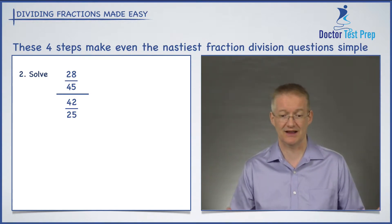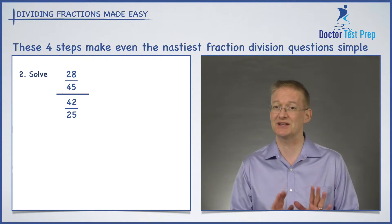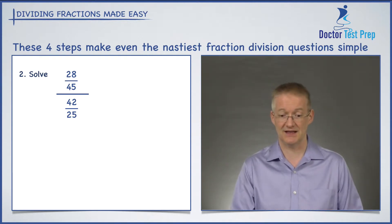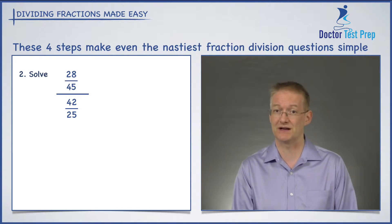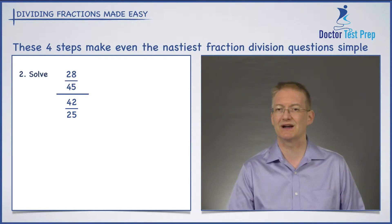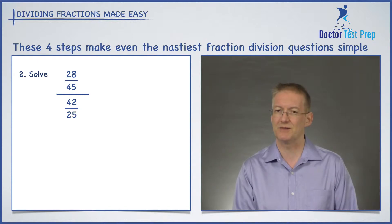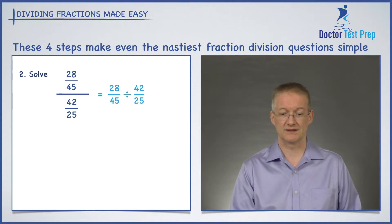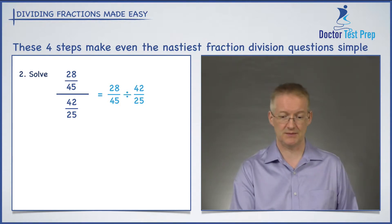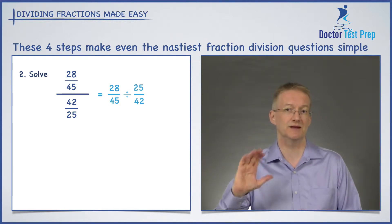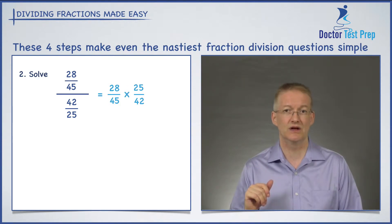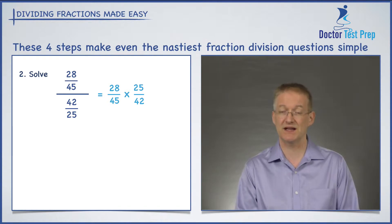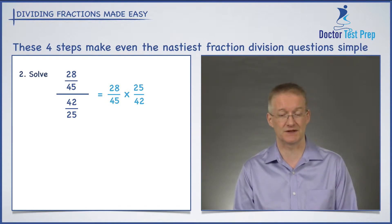Number two looks nasty — horrible looking — but it's actually no more difficult than the last question. So 28 over 45 divided by 42 over 25. I'm going to rewrite this into a format that I'm a little more used to — that is exactly the same question. There are no mixed numbers here so I don't need to worry about step number one. Step number two tells me to flip that second fraction upside down and convert the divide sign into a multiply. So now I've got 28 over 45 times by 25 over 42.